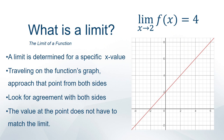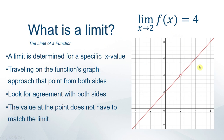The key point is that the value of the function at the exact point does not have to match where you are headed. One possibility is everything is smooth and connected, so the function value equals the limit. Another possibility is there's just a hole there — heading from the left and from the right you're still headed towards 4, so the limit as x approaches 2 is 4, but f of 2 is undefined. We can get as close as we want to 2 and we're headed towards 4.